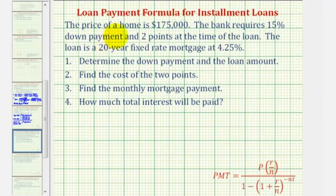Welcome to an example on how to determine the loan payment for a mortgage when there's a down payment requirement and the loan also has points. The price of a home is $175,000. The bank requires 15% down payment and two points at the time of the loan. The loan is a 20-year fixed rate mortgage at 4.25%.